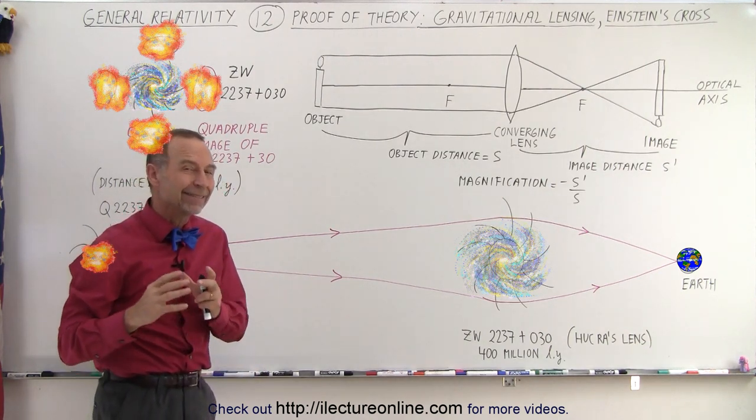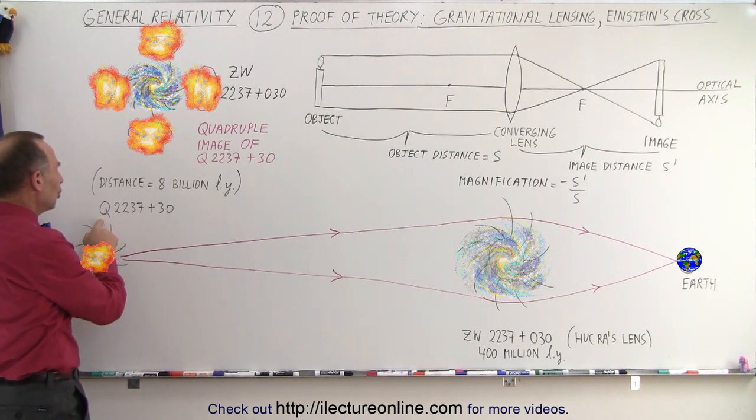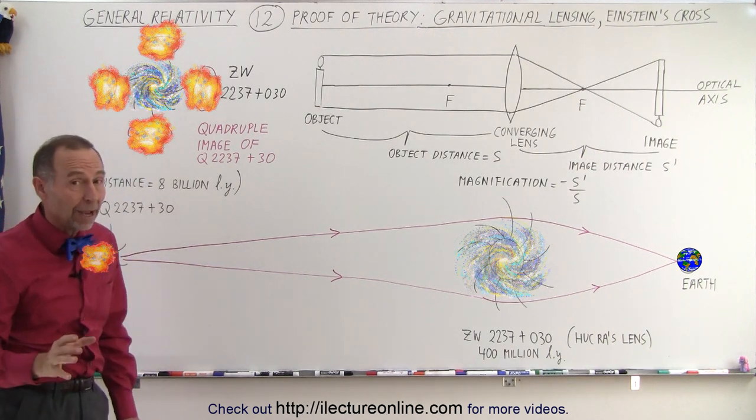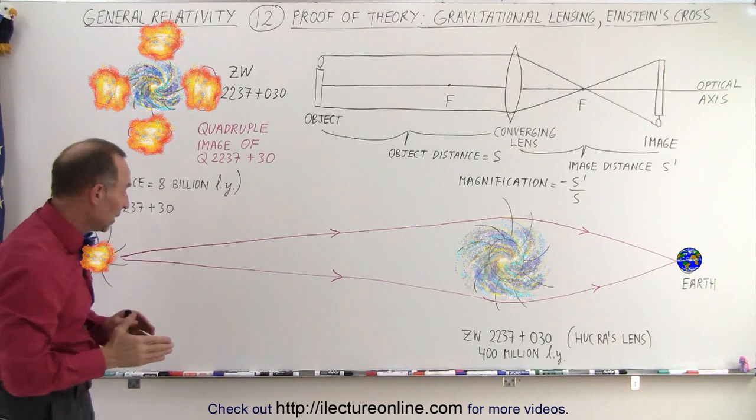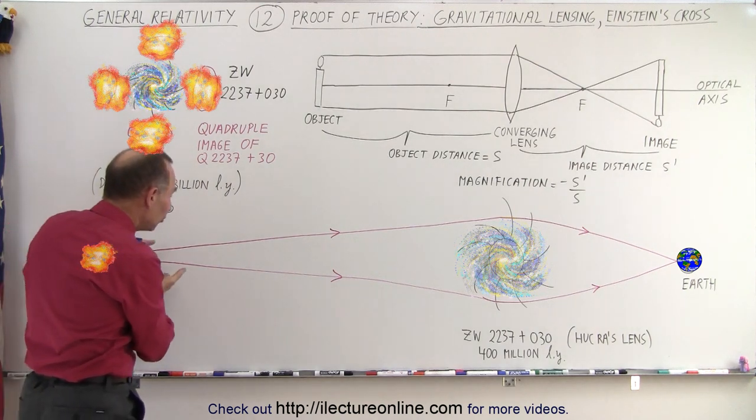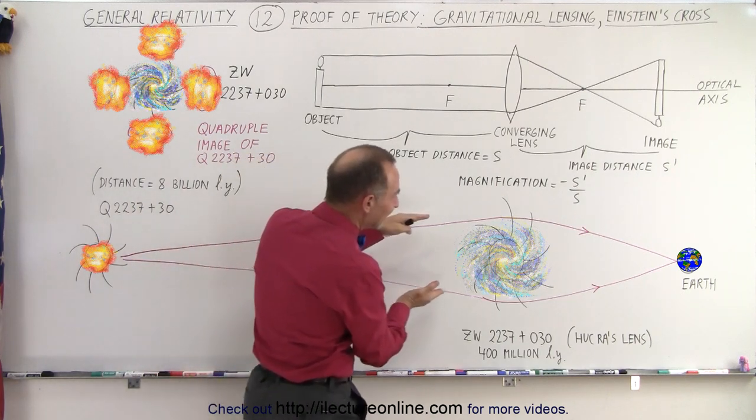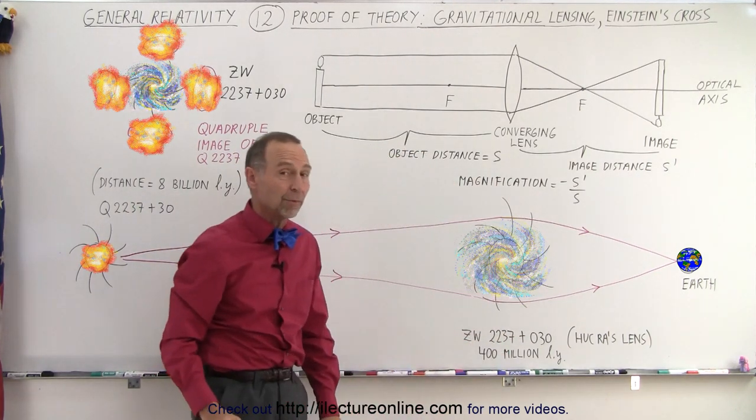And the most dramatic example of that is a particular galaxy right here, which is known as Q2237 plus 30. It is eight billion light years away. So at that distance, that galaxy would be barely visible. But the light that's been traveling through space for eight billion years passes by exactly another galaxy, which is about 400 million light years from us.